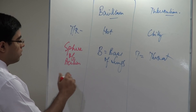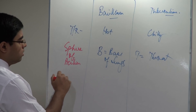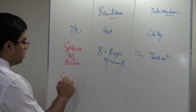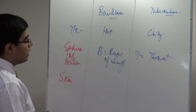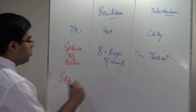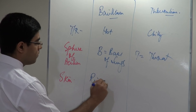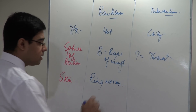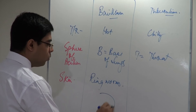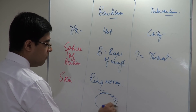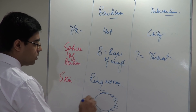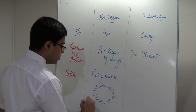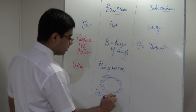If you think of skin, in case of Bacillinum you will get more ringworms, and surrounding the ringworms you will get venous plethora — a bluish appearance around the ringworms.